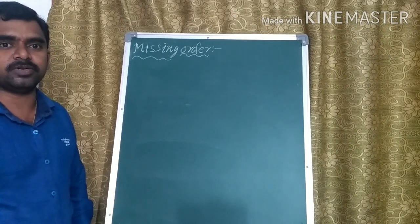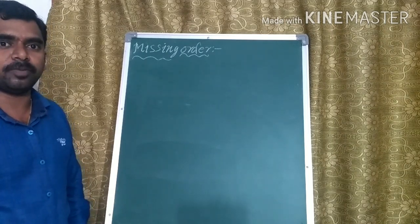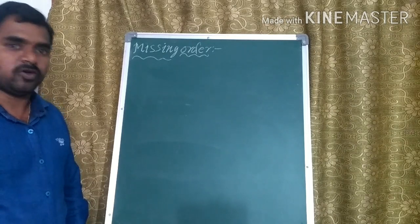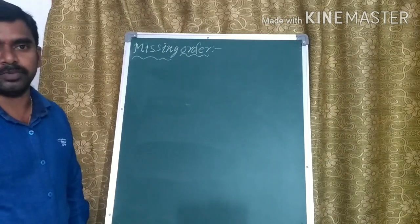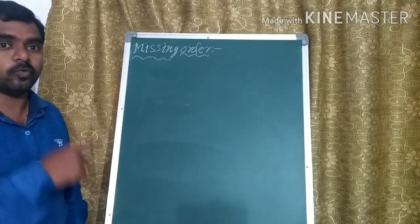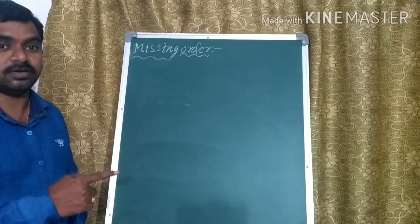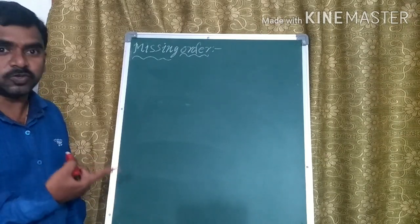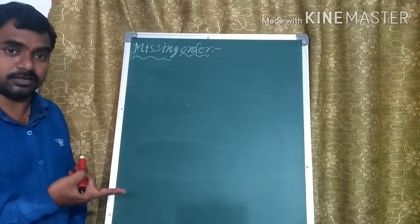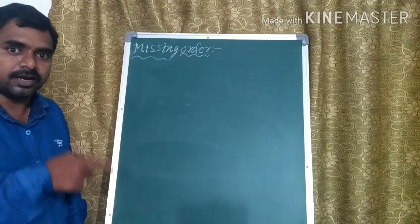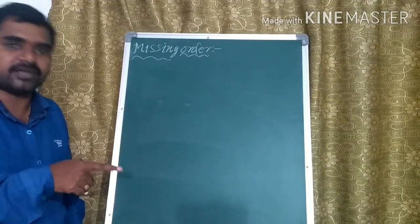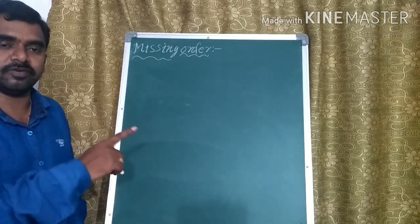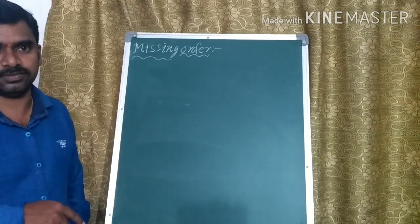Previously we have discussed about the Fraunhofer diffraction at double slit experiment. In the Fraunhofer double slit experiment, on that screen we can observe the combination of the interference pattern due to the two slits and also the diffracted rays due to the secondary wavelengths at the slits.